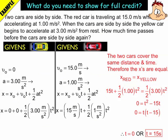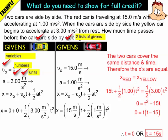So now what do you need to show for full credit? When I'm looking at all this, what I'm looking for is two lists of givens. Two accelerations, two lists of givens. I'm looking for the variables in my list. I'm looking for the numbers. And I'm looking for the units. Arrows as well.